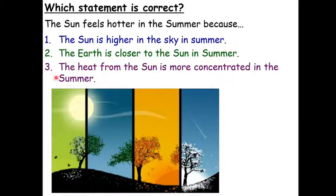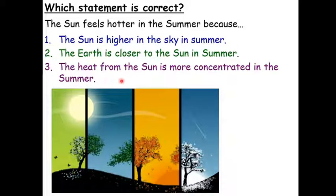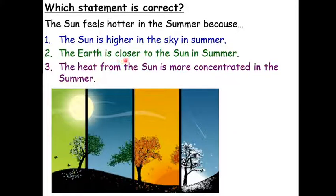For this activity, decide which statement correctly finishes the sentence: the sun feels hotter in the summer because... Is it that the sun is higher in the sky in summer? Is it that the Earth is closer to the sun in summer? Or is it that the heat from the sun is more concentrated in summer? Number one is actually a correct statement, but it's not the reason why it feels hotter. Number two is completely false — the Earth is not closer to the sun in summer. Number three is the correct explanation: the heat from the sun is more concentrated in summer, and that is why it feels hotter.